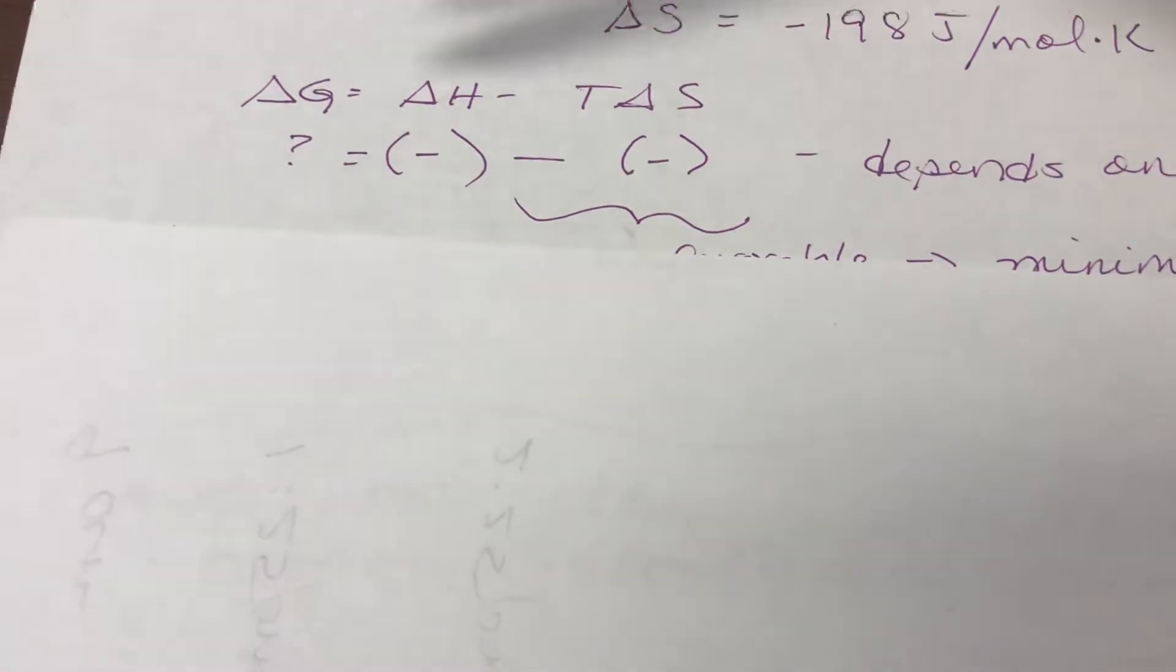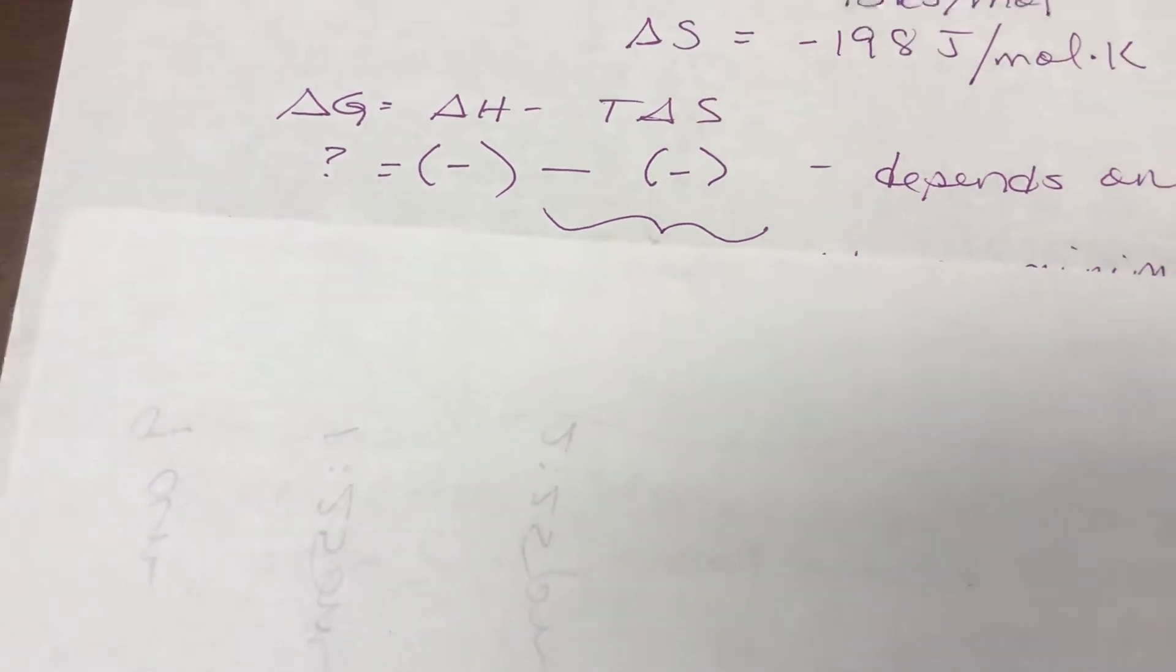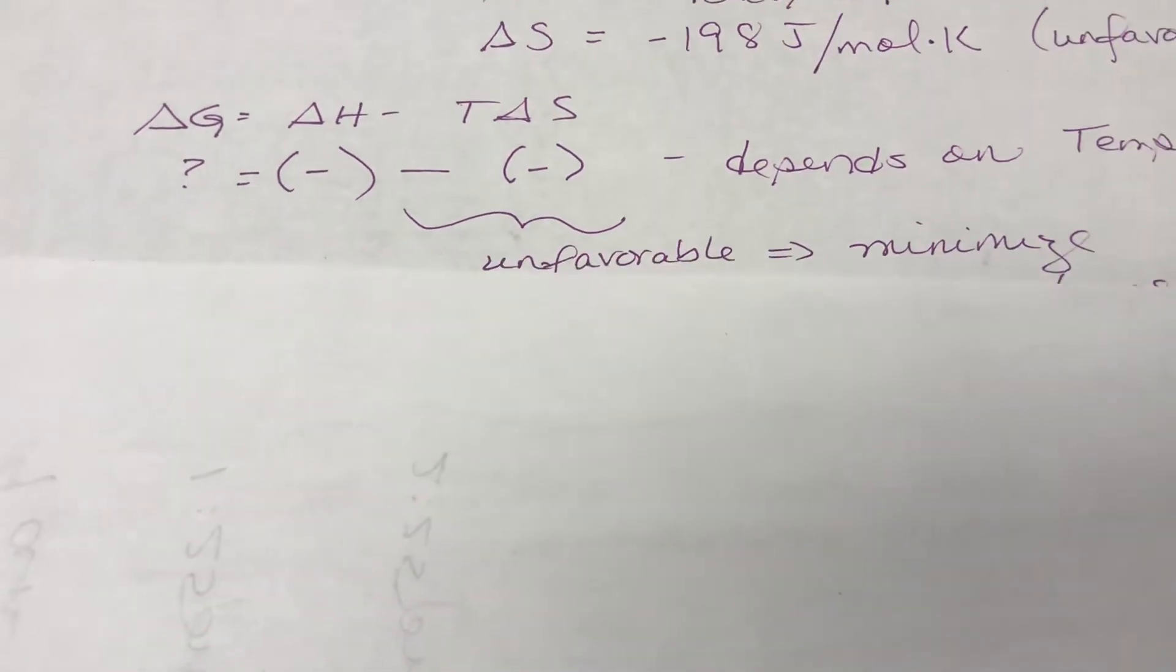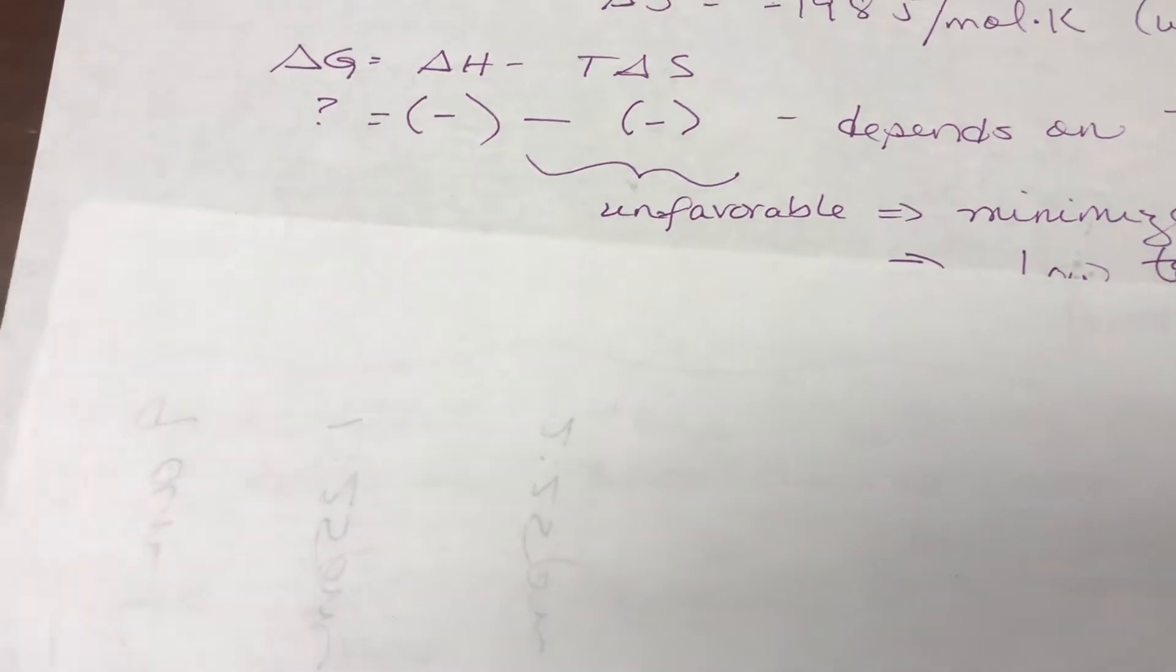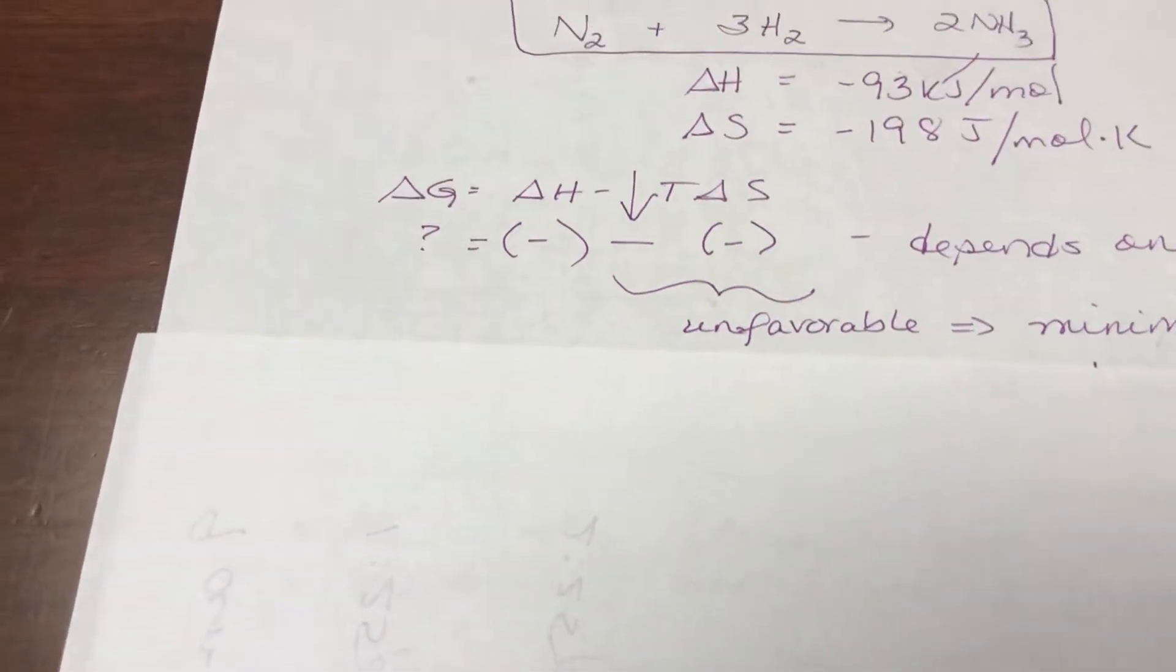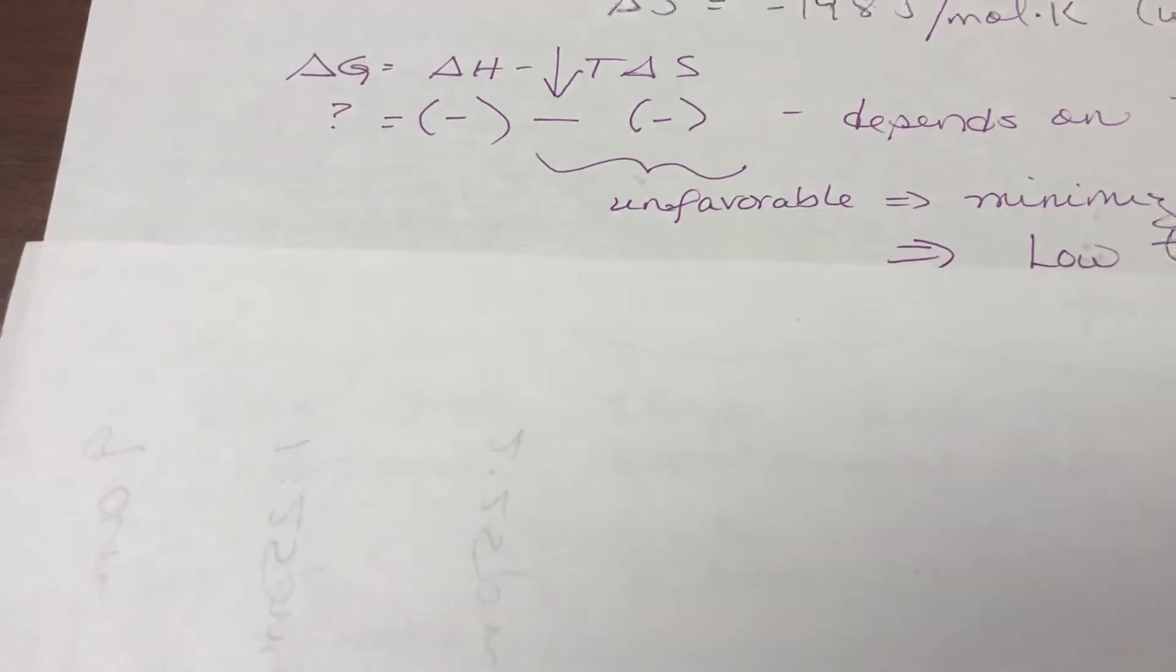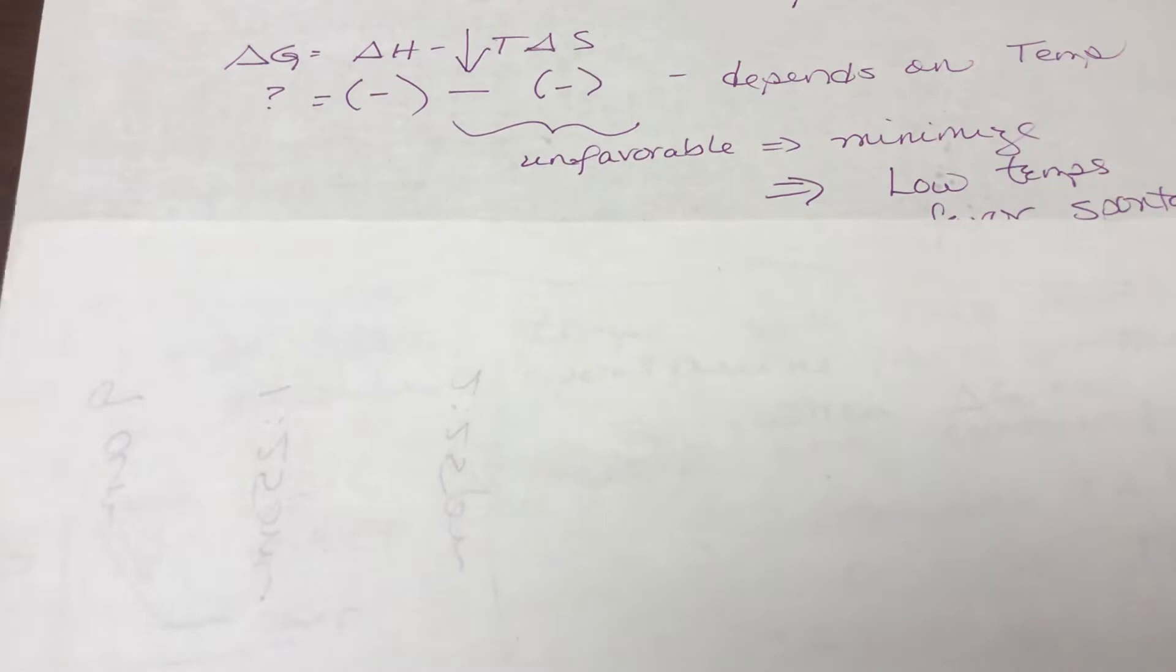I have a question mark by delta G because it depends on temperature and so because we want to minimize the entropy term, the only way to do that is to lower the temperature which minimizes that whole T delta S term and so keep that in mind, we want low temperatures.